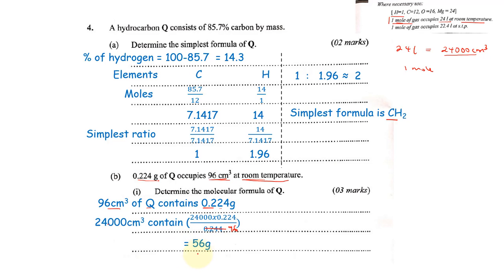This means that this is the mass for one mole of Q, because one mole of Q would occupy 24,000 cubic centimeters. For us to know the actual molecular formula, we shall use the empirical formula. The simplest formula is known as the empirical formula. Empirical formula times a certain number or multiple will always give us the molecular formula, which is also equal to the molecular mass.